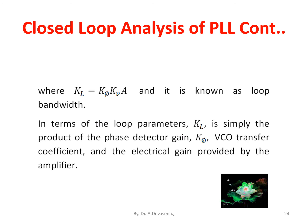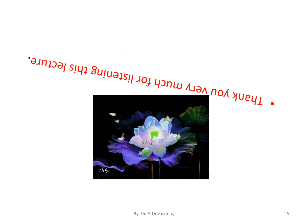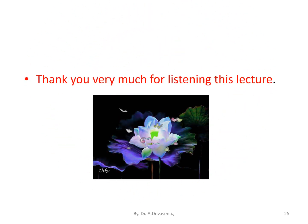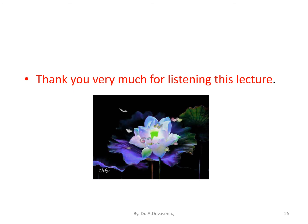In terms of the loop parameters, KL is simply the product of phase detector gain Kφ, VCO transfer coefficient Kᵥ, and the electrical gain provided by the amplifier A. Thank you very much for listening to this lecture. If you like this lecture, kindly share this video with your friends and kindly subscribe to this channel.